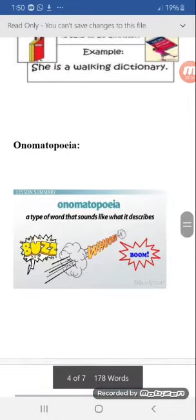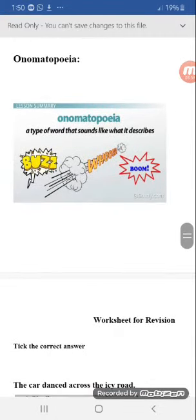Onomatopoeia is a type of word that sounds like what it describes. Examples include buzz, whoosh, and boom. With the word or sound of buzzing, we'll directly think about bees in our mind.